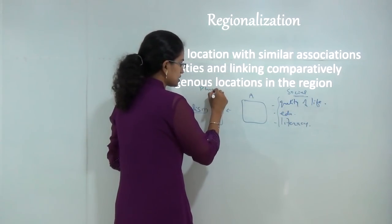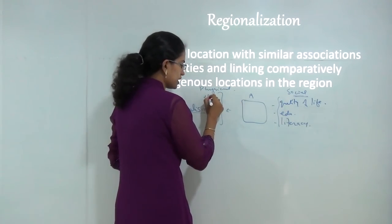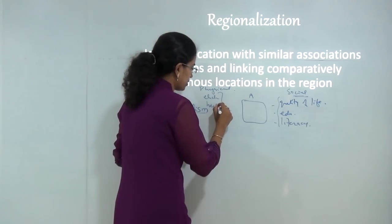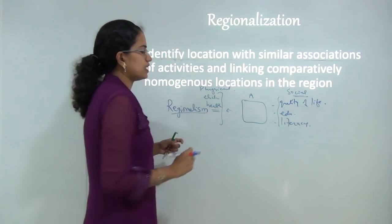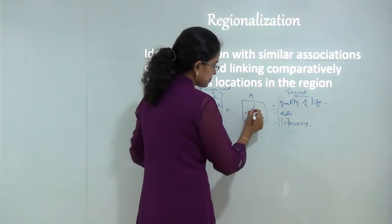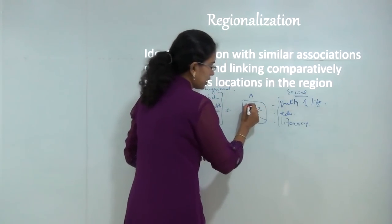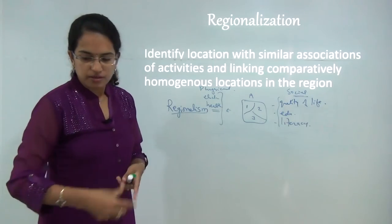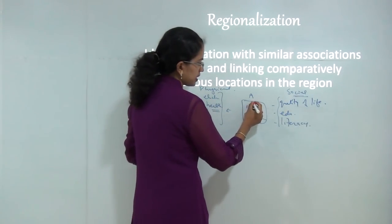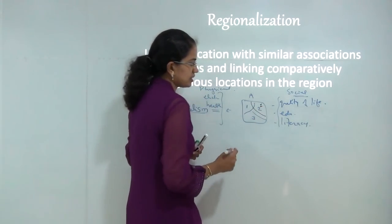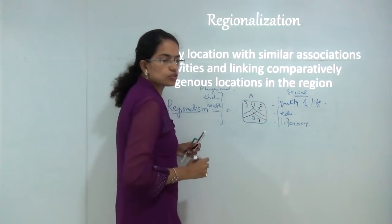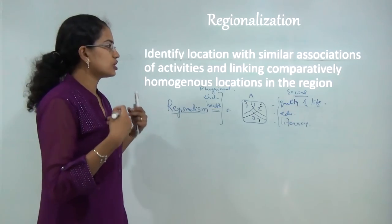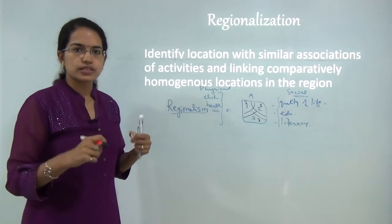Then there are other physical or infrastructural parameters: availability of electricity, whether this region is rural or urban, healthcare facilities and so on. Based on these parameters, I can classify this region into regions 1, 2 and 3. Region 1 is the region with the highest electricity; 2 and 3 are the regions with poor electricity supply. On the same map, I can do another classification where region 1 is the region of highest literacy and 2 and 3 are regions of low literacy. That is how I can regionalize an area based on different characteristics.